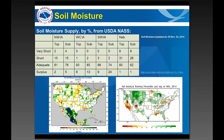Soil moisture data from the USDA across four segments covering different parts of Iowa and Nebraska shows that most areas in this part of the country are at inadequate to surplus water supply levels in the soil. This is despite having been fairly dry recently, so we're actually in decent shape heading into a winter freeze-up right now.